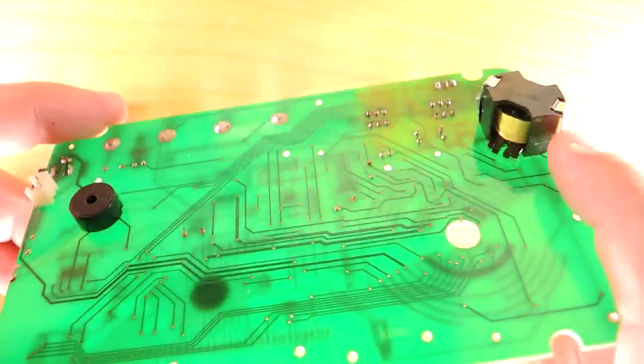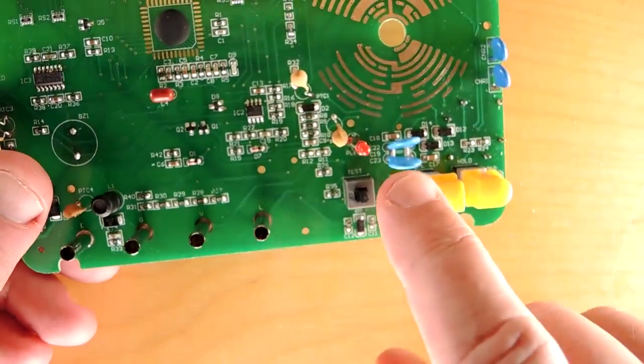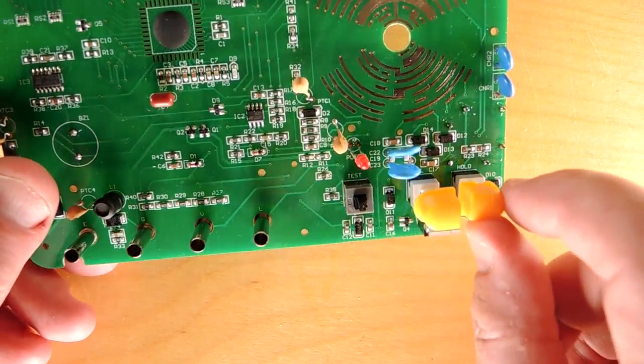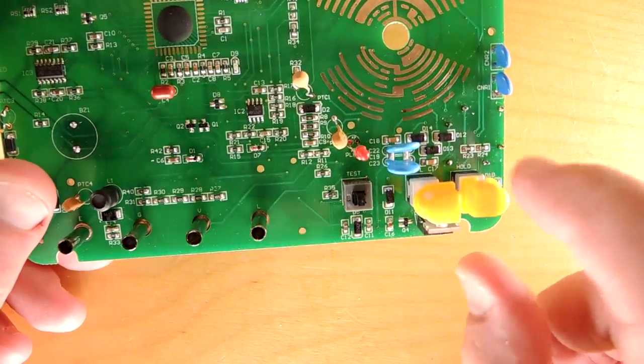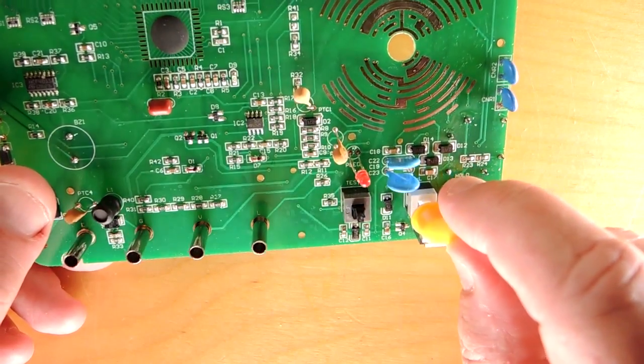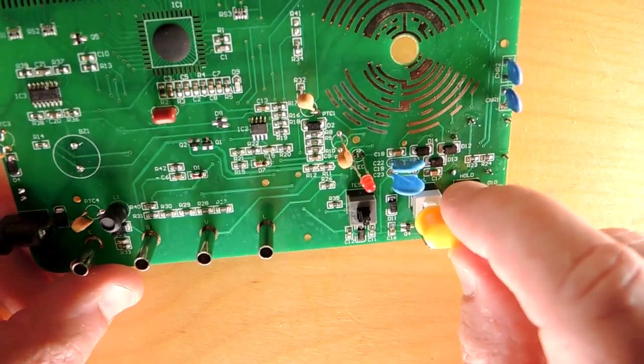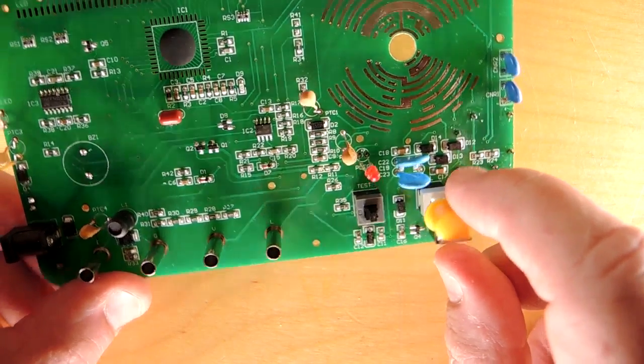We can see a fairly significant transformer, and then this side some high voltage capacitors and a transistor here. I suspect this forms a boost circuit that creates 250, 500 or 1,000 volts.